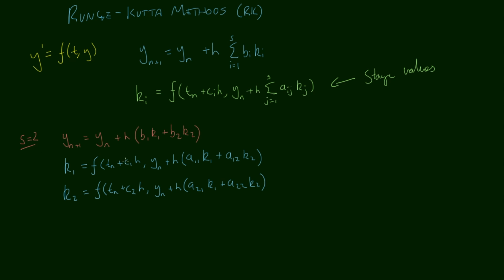The values of B1 and B2, C1 and C2, and our A values here - these are what define or what specify what our Runge-Kutta method is.